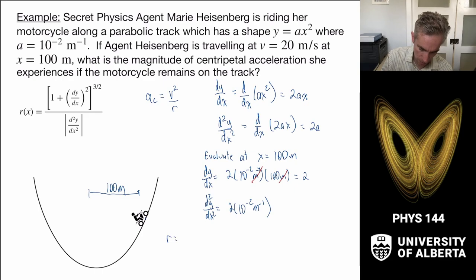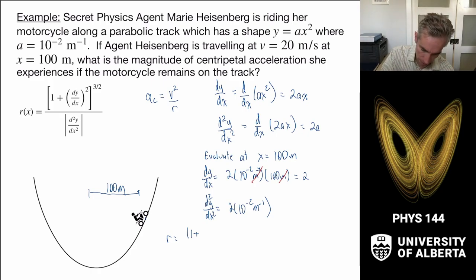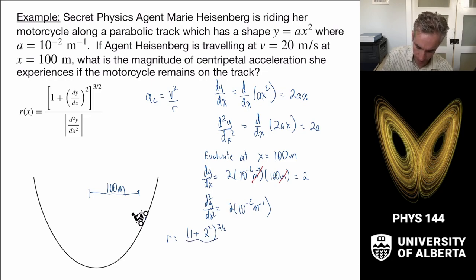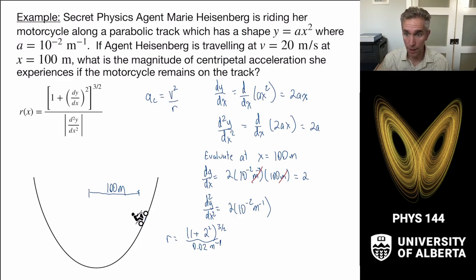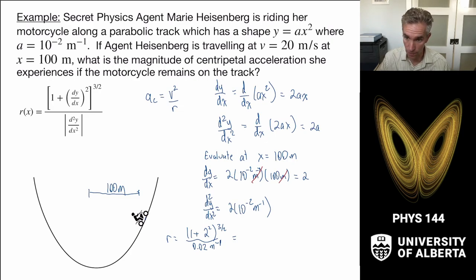The radius of curvature is equal to 1 plus the quantity dy/dx squared, all raised to the 3/2 power, divided by the second derivative. That's 1 plus 2 squared, all raised to the 3/2 power, divided by 0.02 inverse meters. The whole radius ends up in units of meters, because that's 1 over inverse meters in the denominator. Plugging this into a calculator — that's 1 plus 5 to the 3/2 divided by 0.02 — we get an answer of 559 meters.